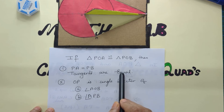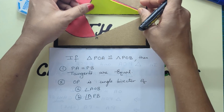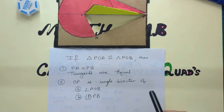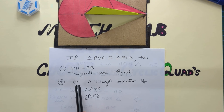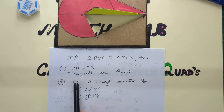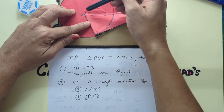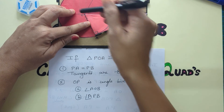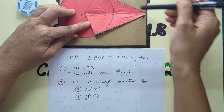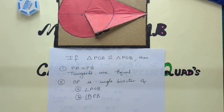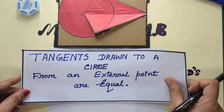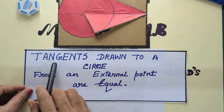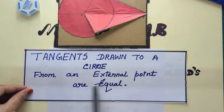First, the tangents are of equal length — lengths of tangents drawn to a circle from an external point are equal. Next, OP, the line joining the center of the circle to the external point from where tangents are drawn, is the angle bisector of angle AOB, and also the angle bisector of angle APB, meaning these two pairs of angles are equal. So the final statement is: tangents drawn to a circle from an external point are equal.